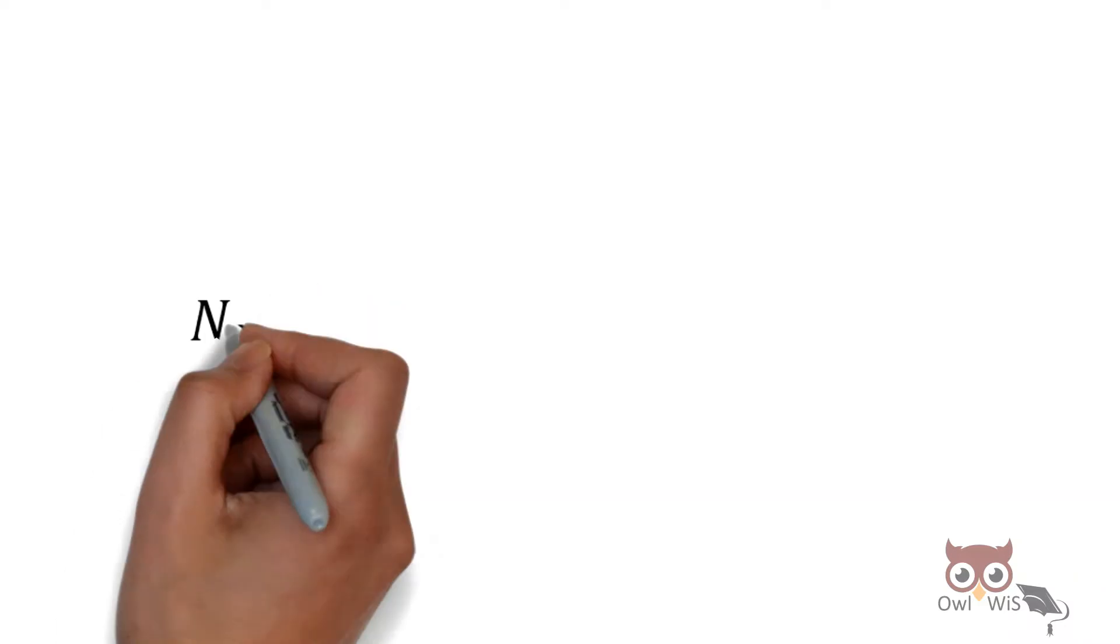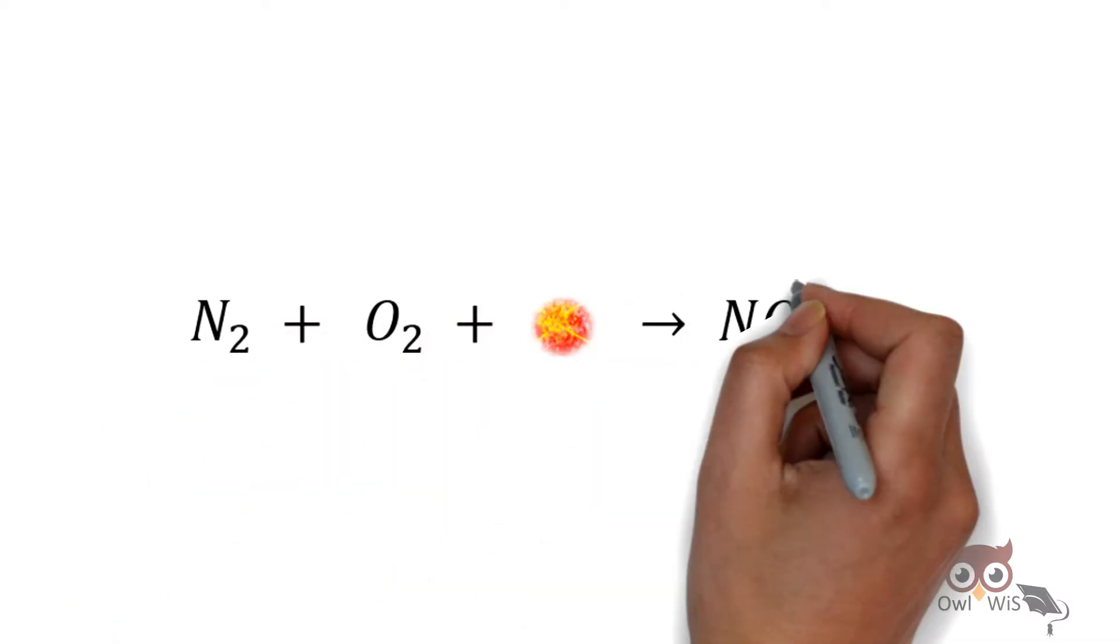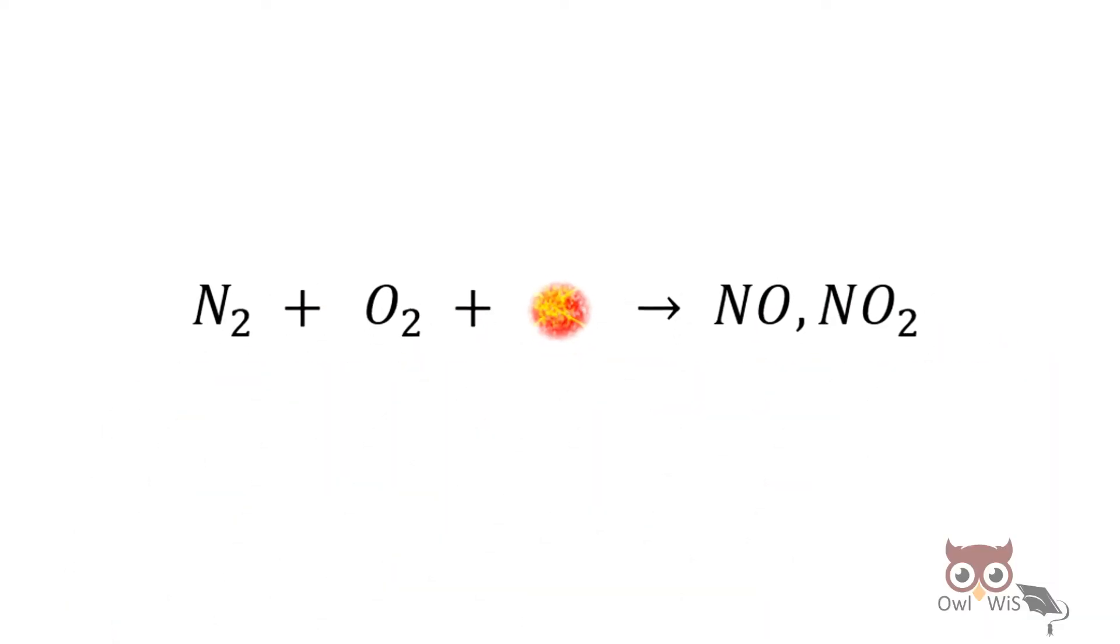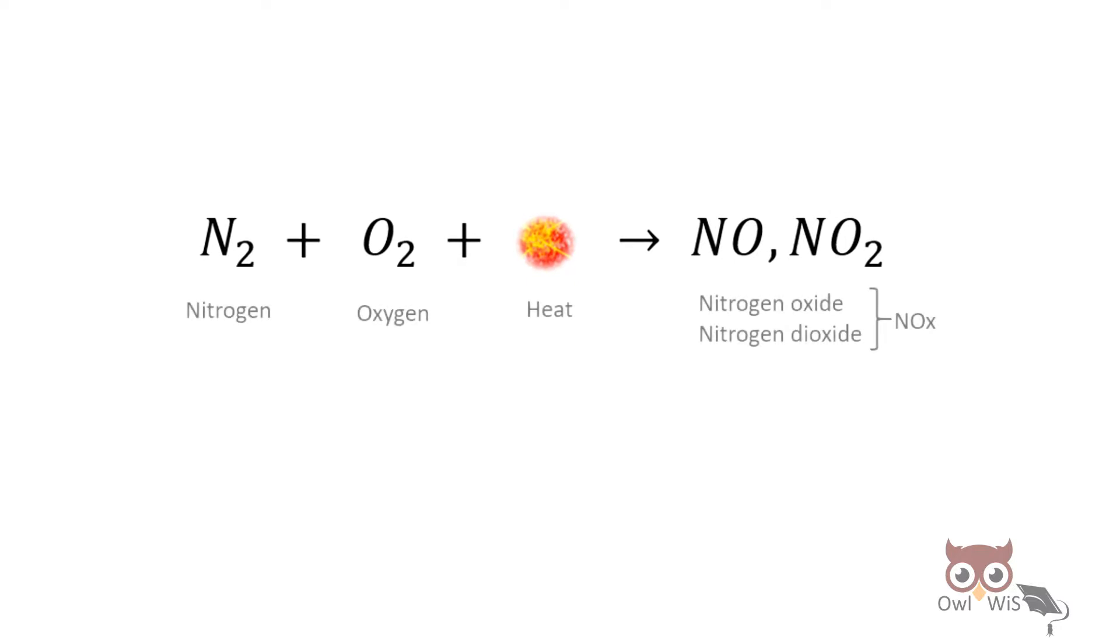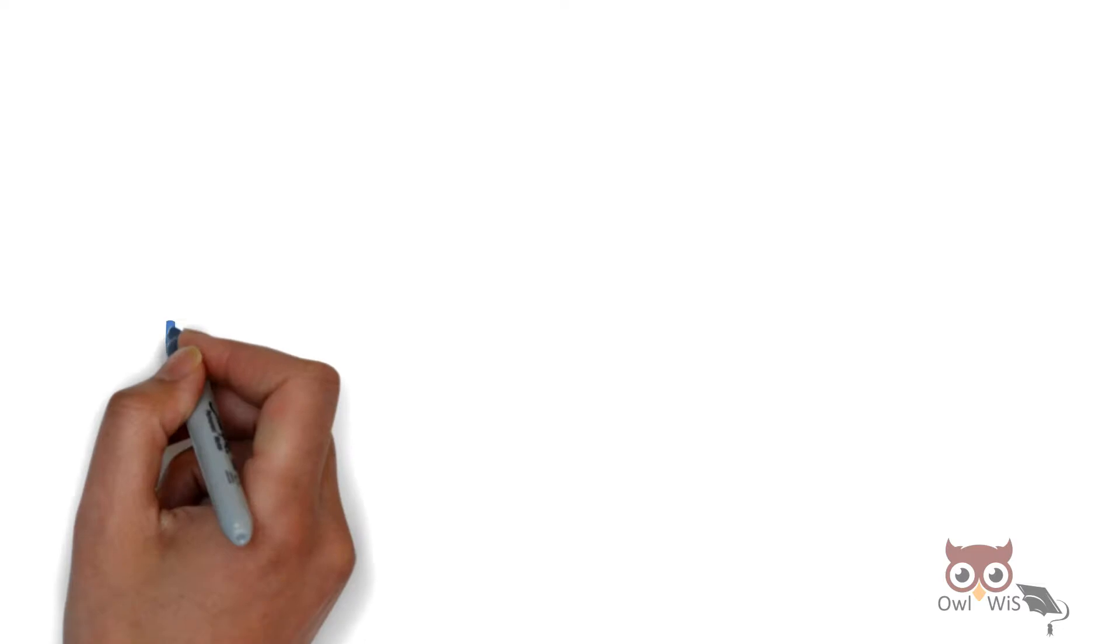Nitrogen in air combines with oxygen in the presence of heat to produce nitrogen oxide and nitrogen dioxide, combinedly called NOx. NOx is produced when the air-fuel mixture is lean.